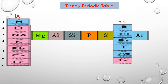Why did I consider these two groups to discuss trends in the periodic table? The 1st A group elements are completely alkali metals — very reactive. The 17th group elements are halogens: fluorine, chlorine, bromine, iodine, astatine. These are all non-metals. So I considered 1A group as metals and 17th group as non-metals to discuss trends.